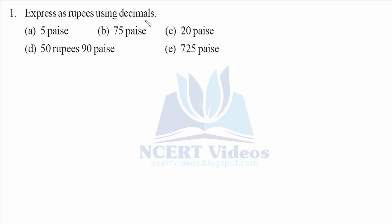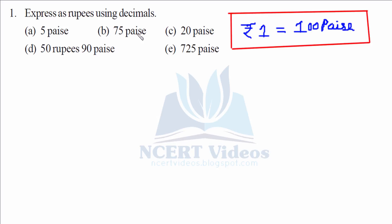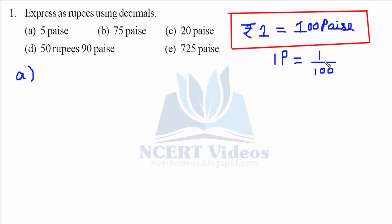Question 1: Express as rupees using decimals. We have to convert paise into rupees. Remember this conversion factor: 1 rupee equals 100 paise. To convert paise into rupees, we write 1 paise is equal to 1 over 100 rupees.